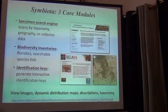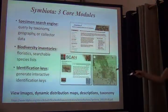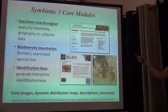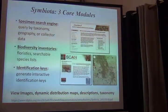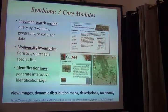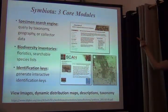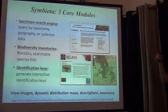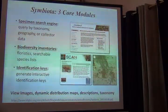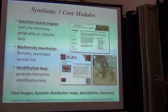This is all based on the specific specimen data sets available through the portal — if the specimen data doesn't exist, you can't make a map referring to it. In addition to those three functionalities, you can also view images, whether field images or voucher specimen images, make live dynamic distribution maps showing all specimens available, and see descriptions and taxonomy.